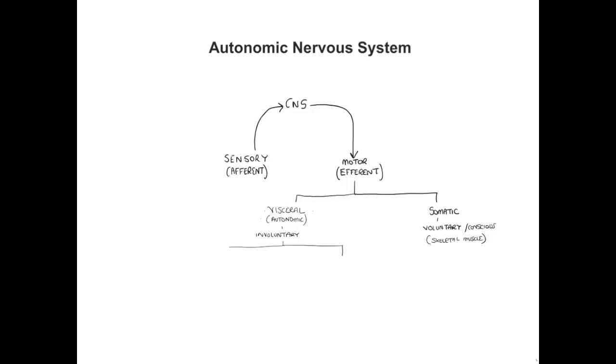We can divide our autonomic nervous system into sympathetic and parasympathetic. These can have opposing or sometimes complementary actions throughout the body, depending on which tissue or organ system you're looking at. The broad actions of our visceral or autonomic nervous system is to innervate cardiac and smooth muscle, but also glands such as sweat glands and salivary glands.